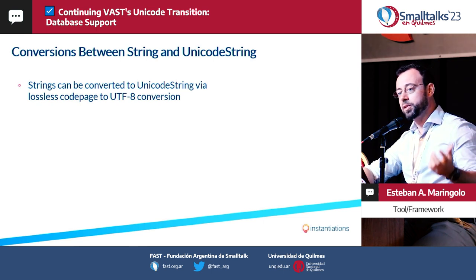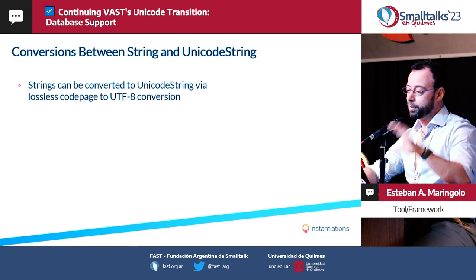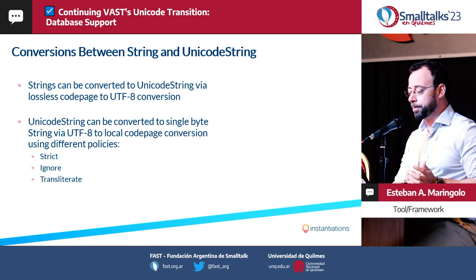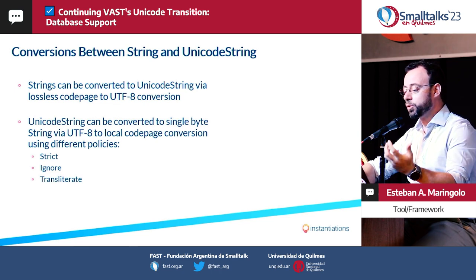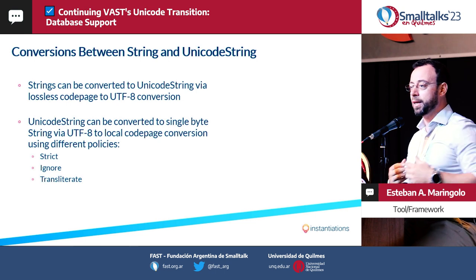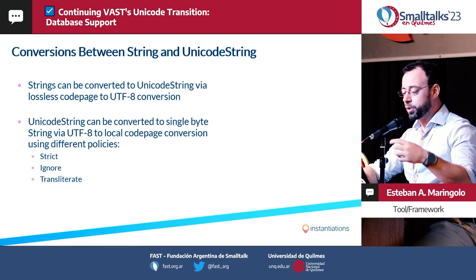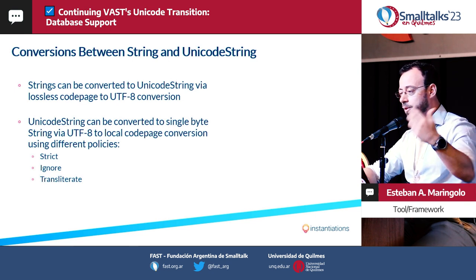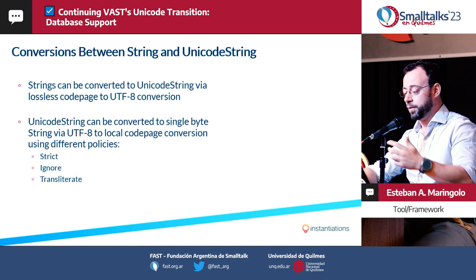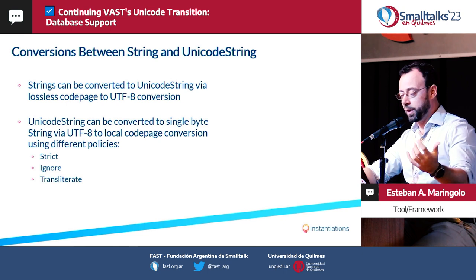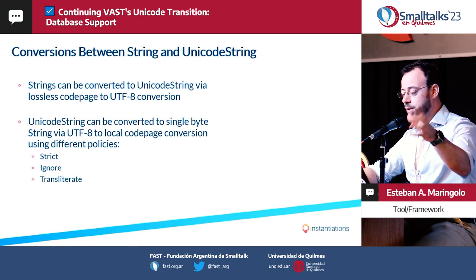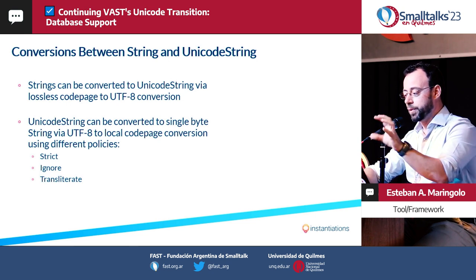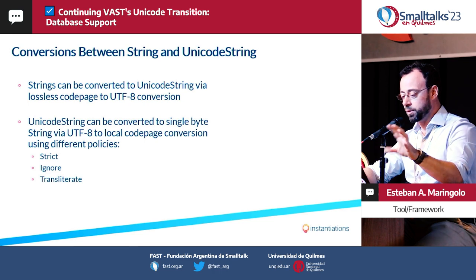You can always convert code page-dependent strings to Unicode strings — that's going to be a lossless code page to UTF-8 conversion. Unicode strings can be converted to single-byte code page-dependent strings, but you can lose data there, for instance you cannot represent an emoji in a Latin 1 code page. To deal with that, our code page converters have different policies: strict — it will fail if it cannot map a character; replace — using the well-known replacement character like a question mark; or transliterate — finding the closest available character.